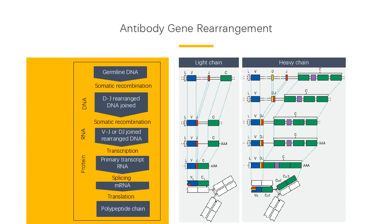In the small pre-B cell, VJ rearrangement of light chain genes occurs. Kappa chain is rearranged first; then, if rearrangement of both kappa alleles is unsuccessful, lambda chain is rearranged. In the large pre-B cell, there is intracellular expression and transient surface expression of M chain with invariant pseudo light chain, forming the pre-B cell receptor.